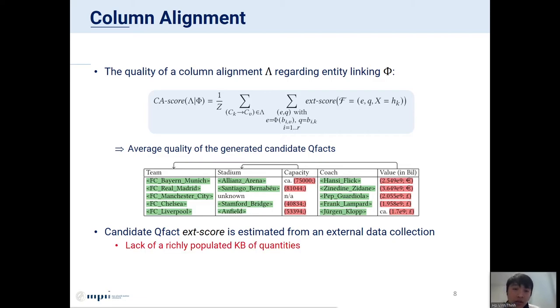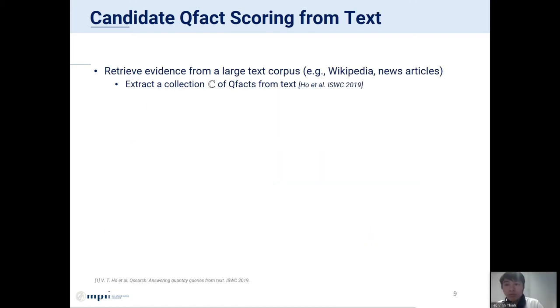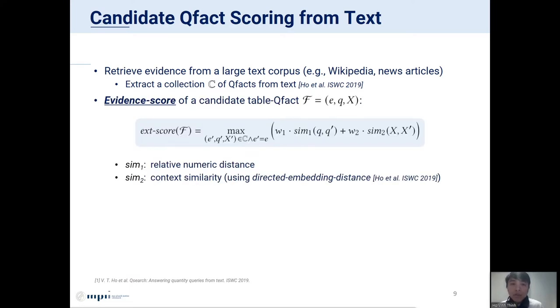Prior work on column alignment usually uses a KB as evidence for scoring a table fact. But as we mentioned before, because we do not have a rich KB of quantities, we have to use a different kind of data. The kind of data that we use is text QFacts. Our key idea for scoring a candidate table QFact is to retrieve evidence from a large corpus of text. In our earlier work, we worked on extracting QFacts from text. Now, we can make use of this technique to extract a collection C of QFacts generated from a large corpus of text documents, for example Wikipedia or news articles. Then, we compute the evidence score for candidate table QFact EQX by finding the best match QFact in C with the same entity E. The QFact similarity is basically the combination of quantity similarity and context similarity, which is measured by the two functions sim1 and sim2.